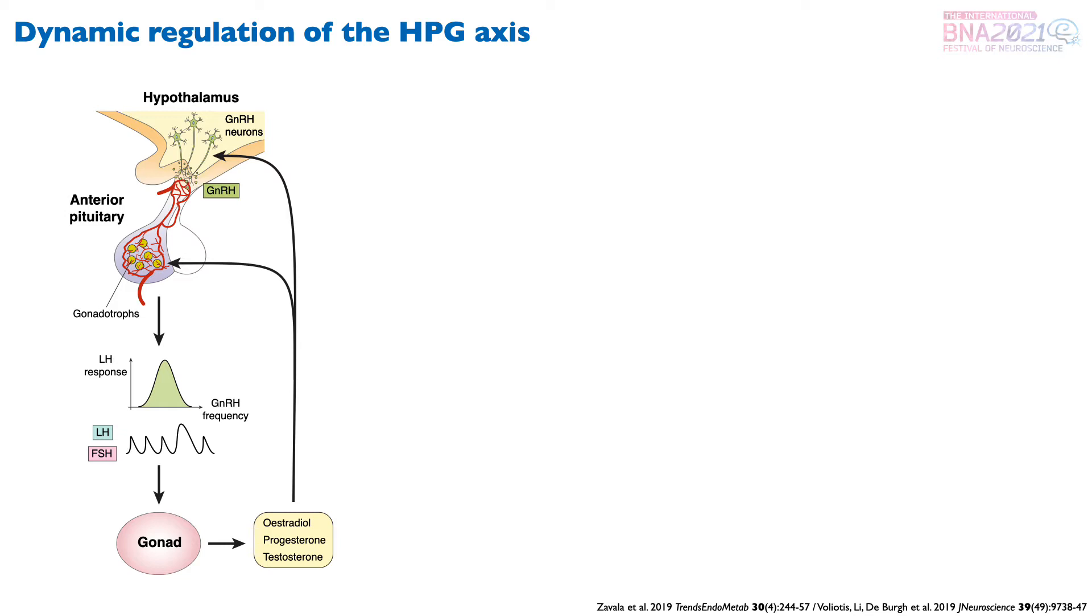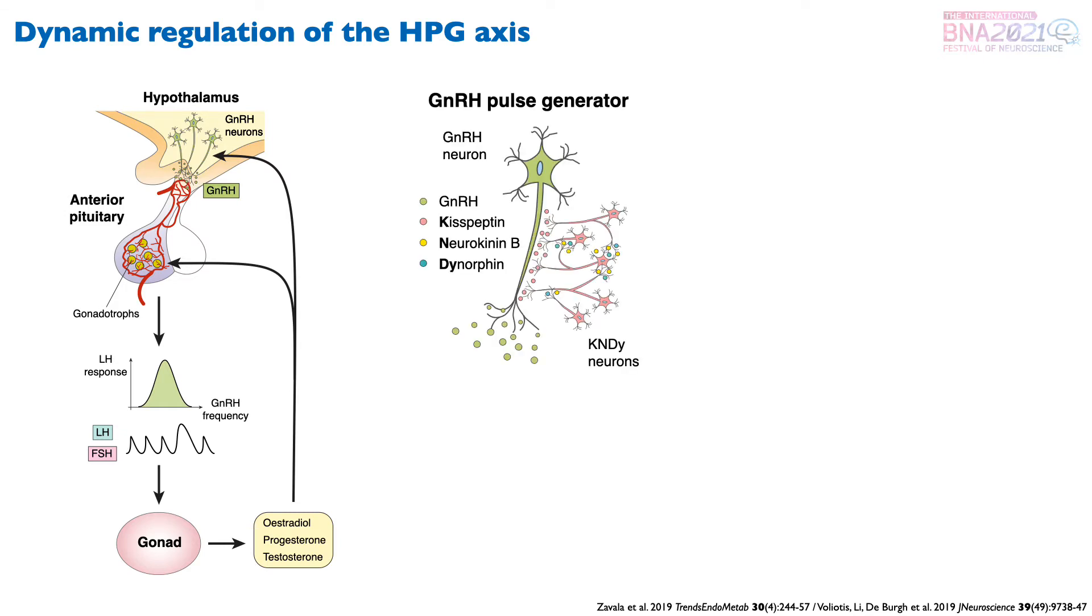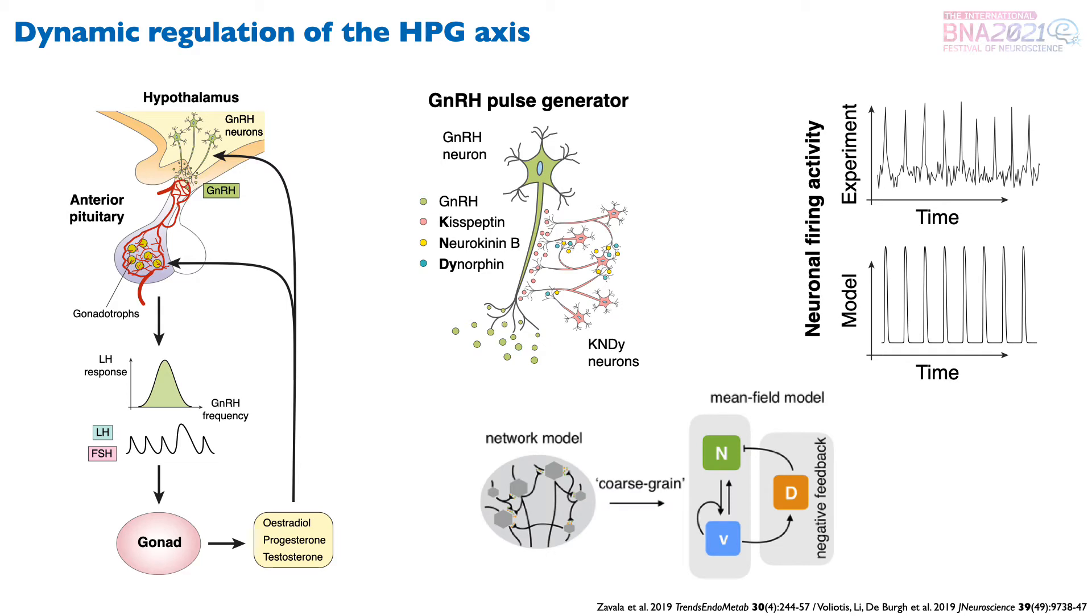One notable difference between the HPA and HPG axis is that the HPG axis has a hypothalamic pulse generator underpinning the ultradian pulsatility of LH and FSH hormones. This pulse generator consists of GNRH neurons with firing activity modulated by kisspeptin, neurokinin B, and dynorphin-secreting neurons, or the KNDy neurons for short. Recent work by Margaritis Voliotis et al. has shown how a coarse-grained mathematical model of the KNDy network can reproduce the pulse generator activity.